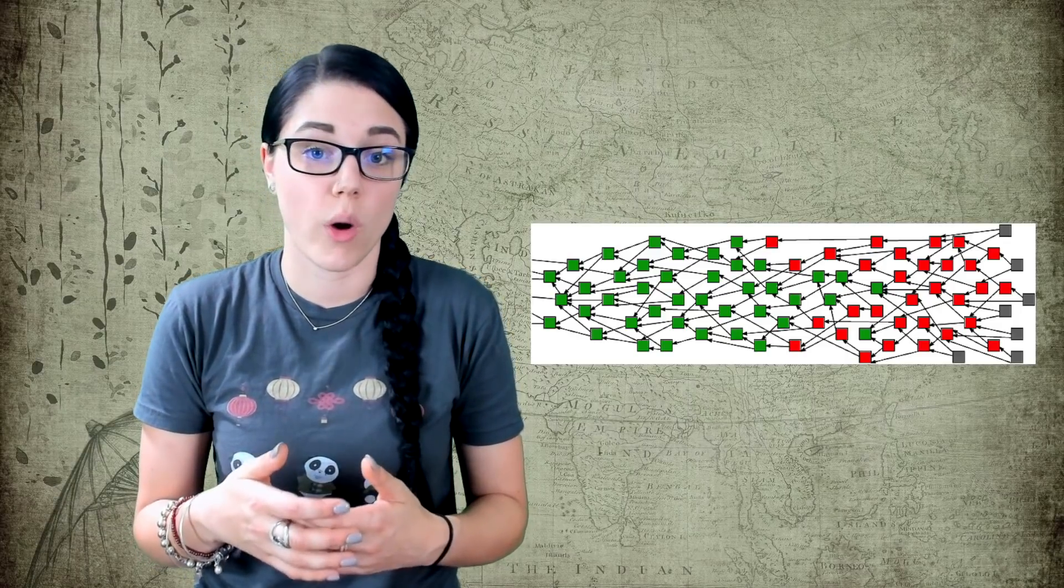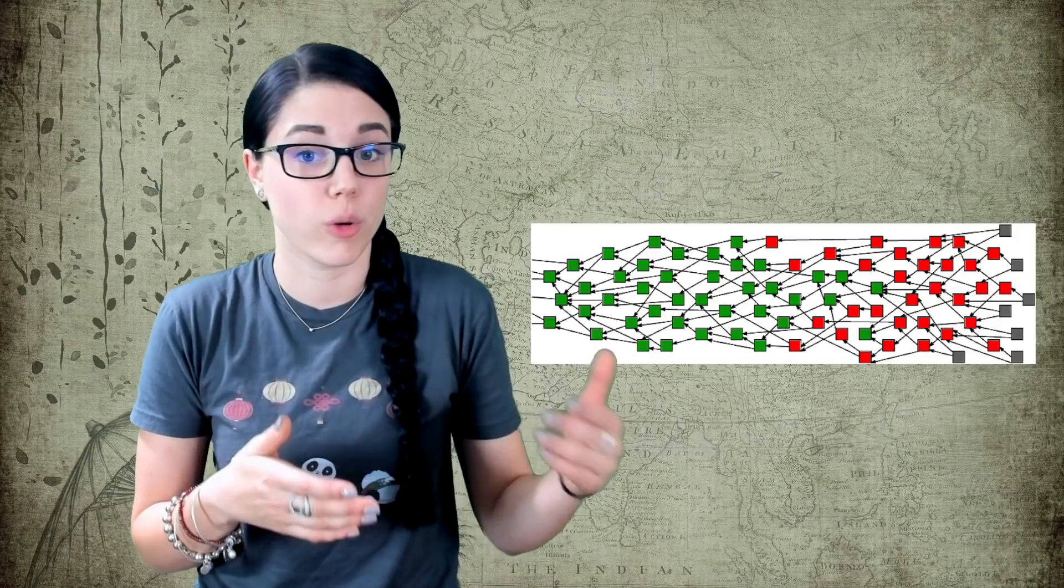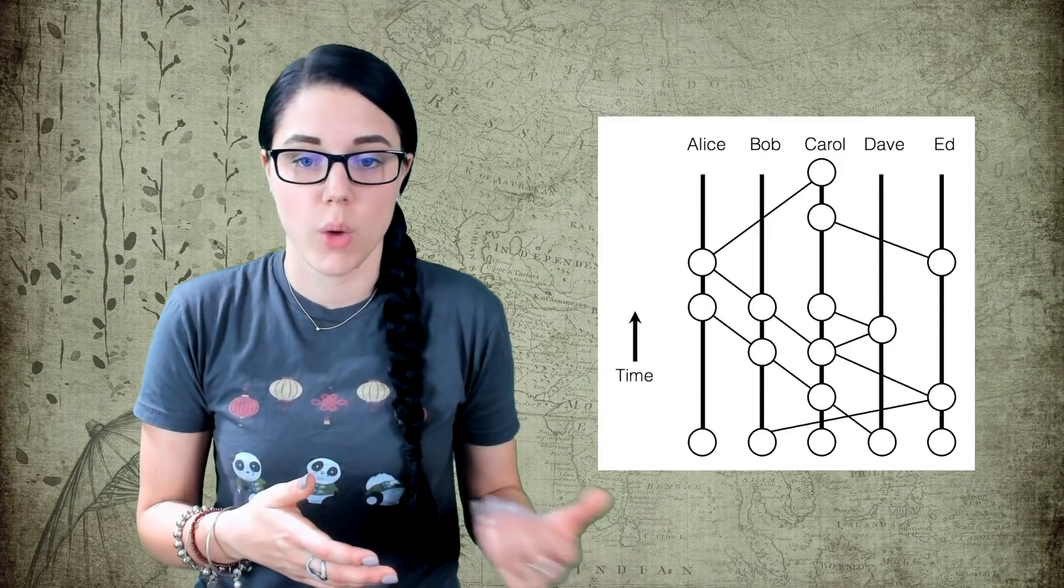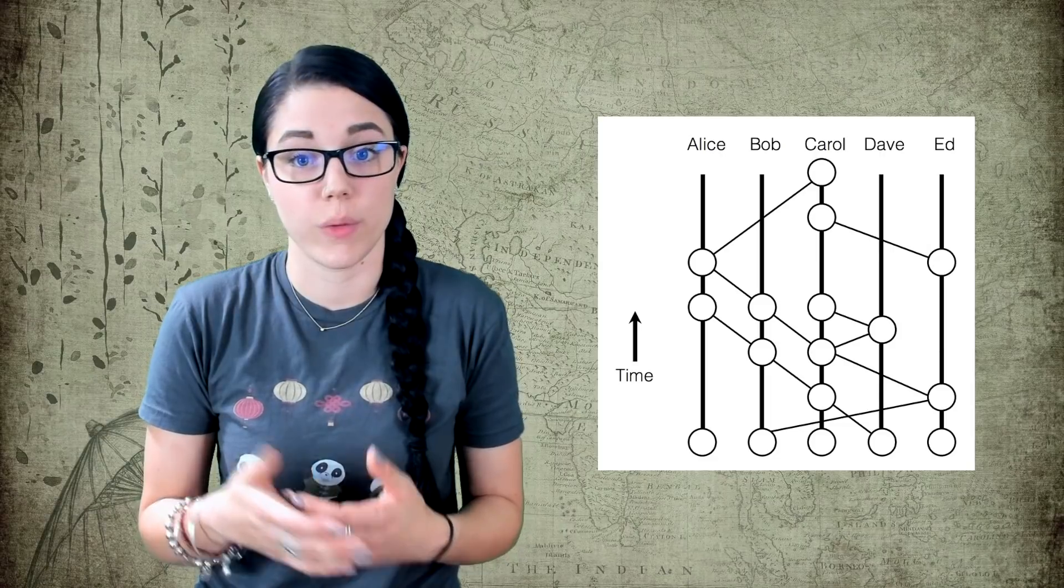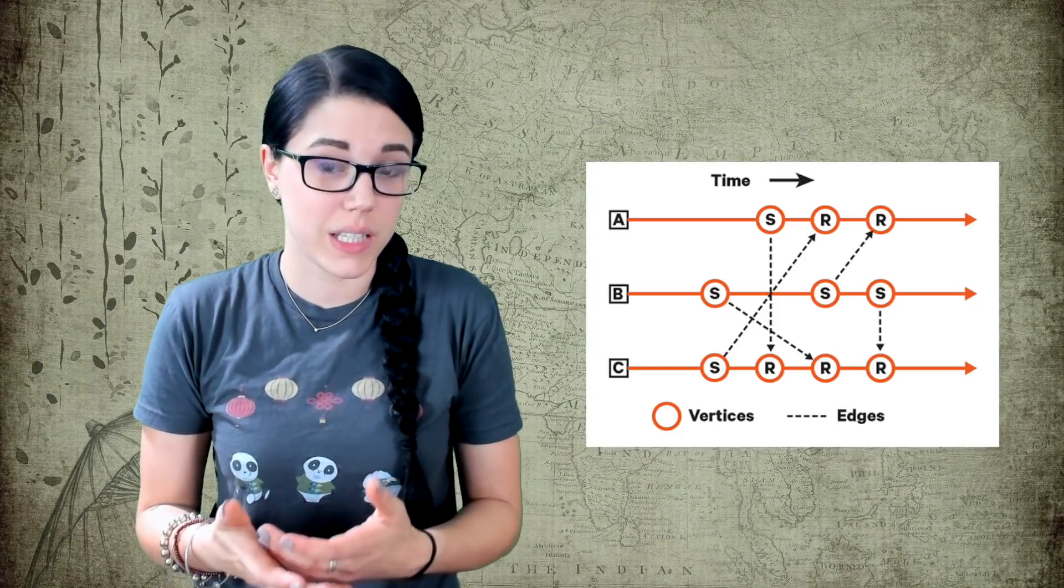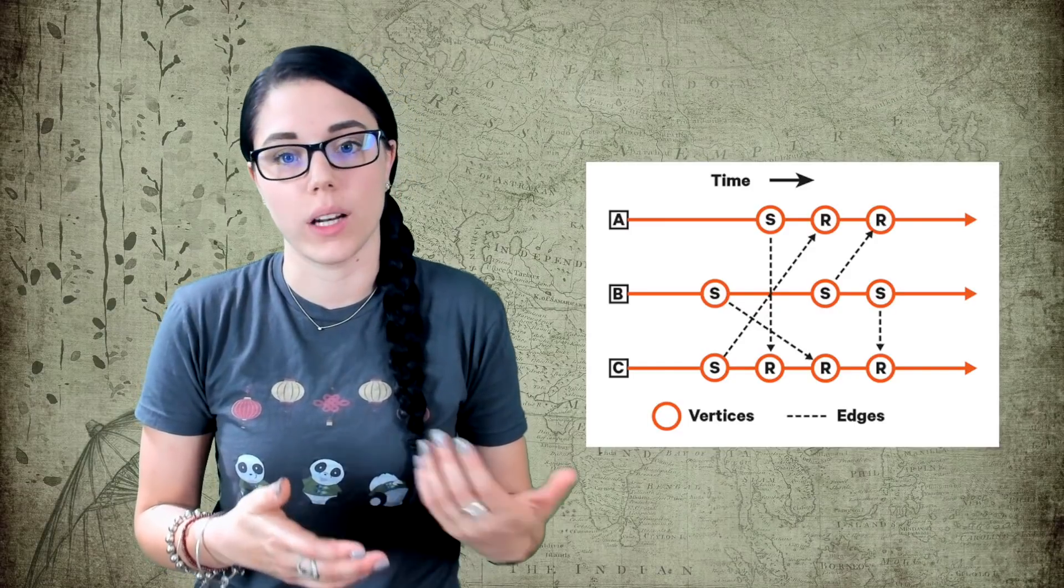Hashgraph uses a gossip-about-gossip algorithm, which means that each transaction has information from the previous transaction that is being shared and confirmed. And Nano achieves consensus by a balanced weighted vote on conflicting transactions. IOTA calls their DAG the Tangle. Nano refers to it as a block lattice, and Hashgraph has named it Hashgraph.